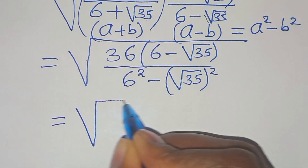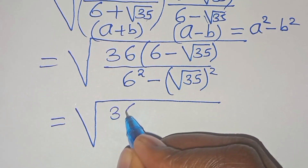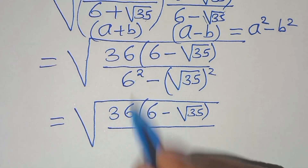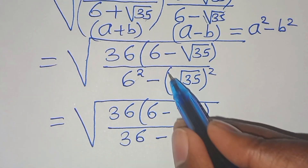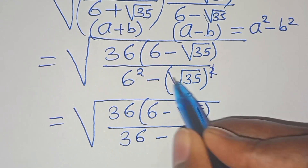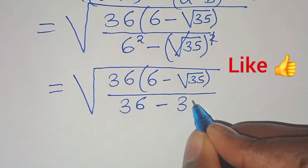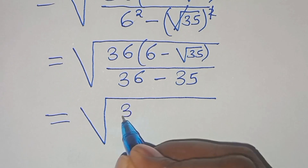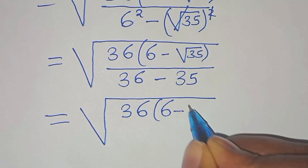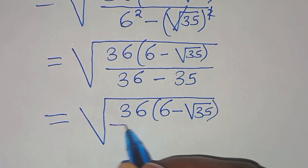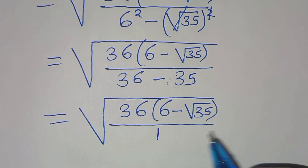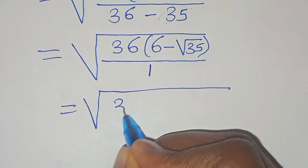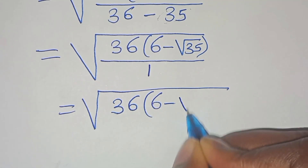This implies we have the square root of 36 multiplied by 6 minus square root of 35, divided by 6 squared — which is 36 — minus square root of 35 to the power of 2. Eliminating the square root sign, we get everything divided by 36 minus 35, which is 1. So we have the square root of 36 multiplied by 6 minus square root of 35.